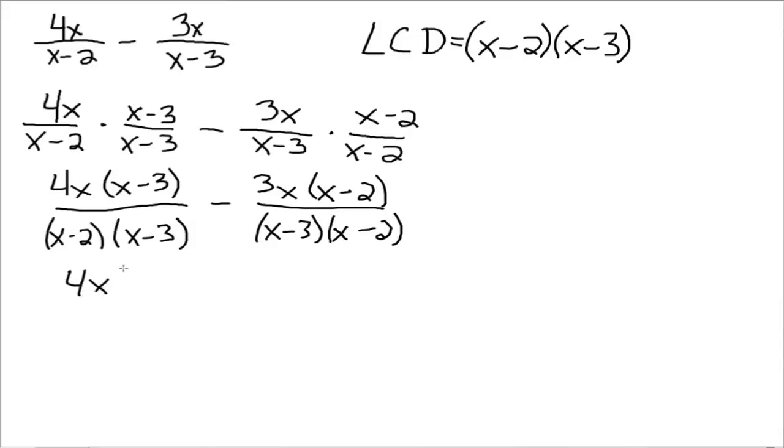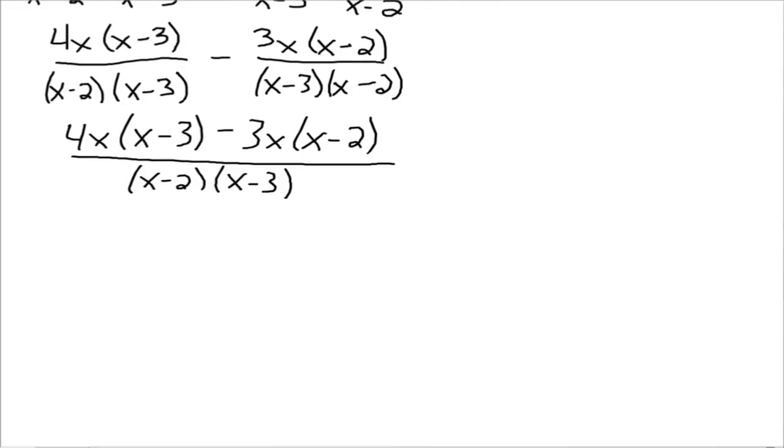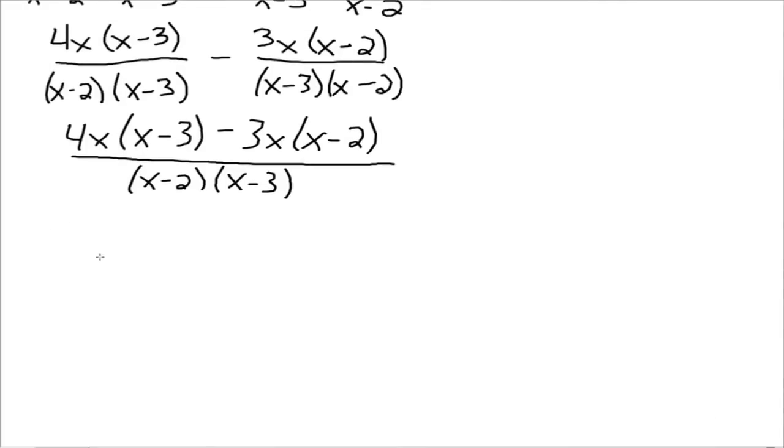So now we can say this numerator minus this numerator all over our one LCD. So now in the next line, we'll have it as 4x times x minus 3 minus 3x times x minus 2 all over our LCD. Now, you could have multiplied those things out on the top. I tend to wait so as not to miss distributing the negative sign because it's very easy to make errors with the negative sign. So now we've got our one fraction and so distribute and simplify up on the numerator. So we have 4x squared minus 12x minus 3x squared plus 6x.